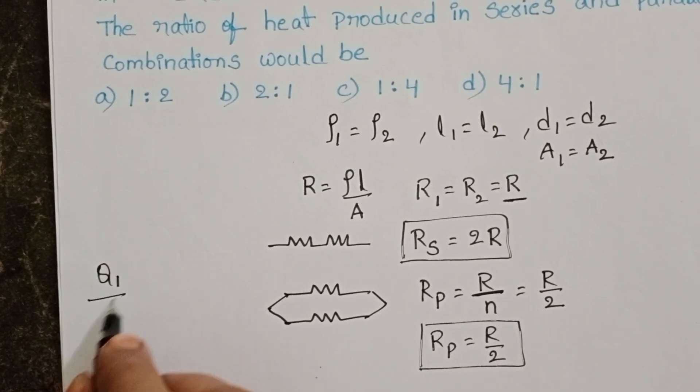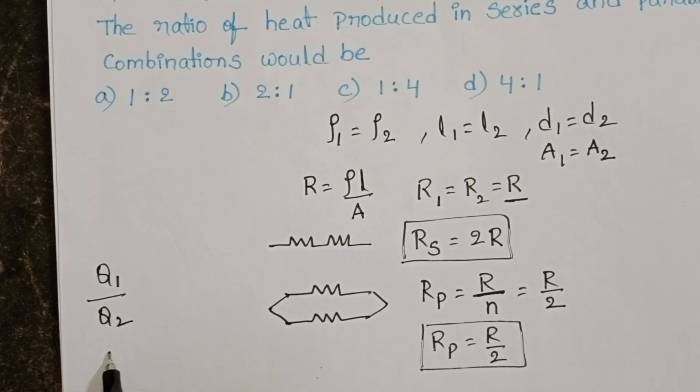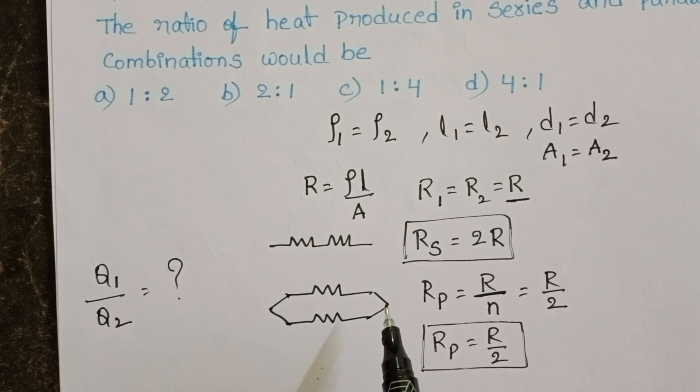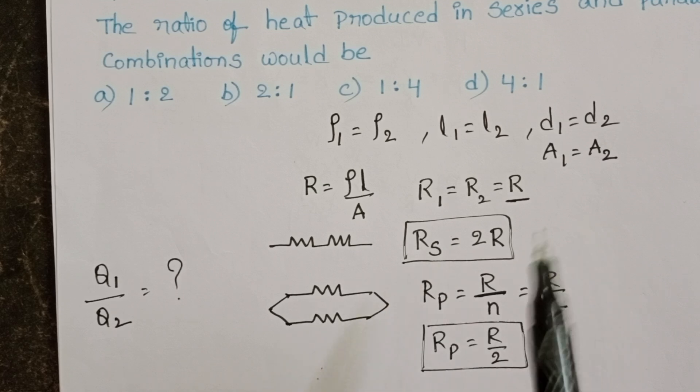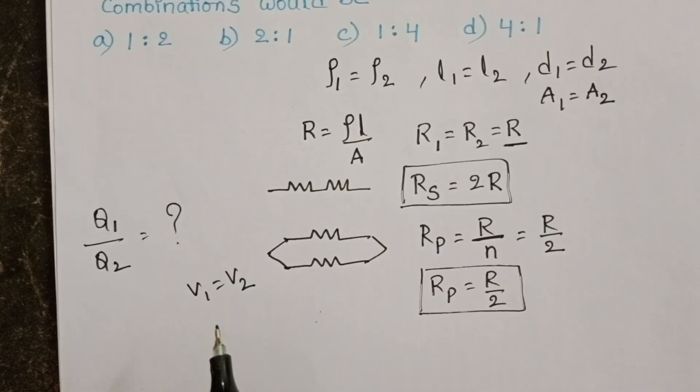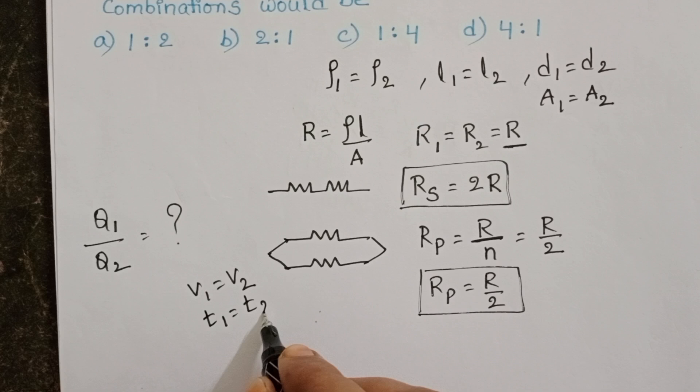Now, we want ratio of the heat produced in series and parallel combinations. These two combinations are connected to the same potential difference. V1 equals V2. And take one more assumption, time also same. T1 equals T2.